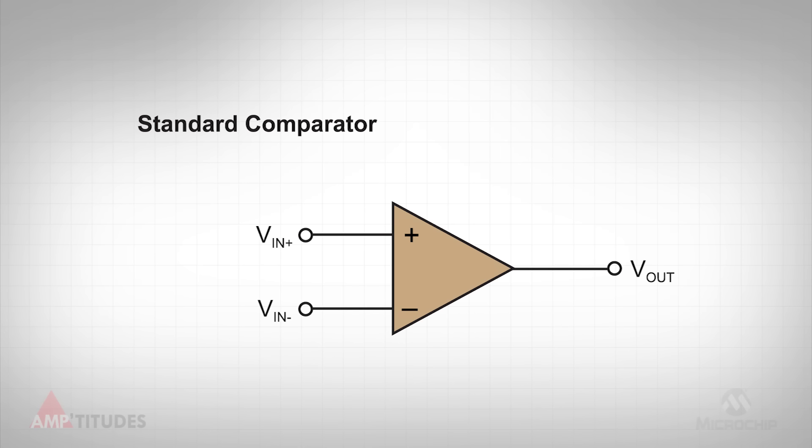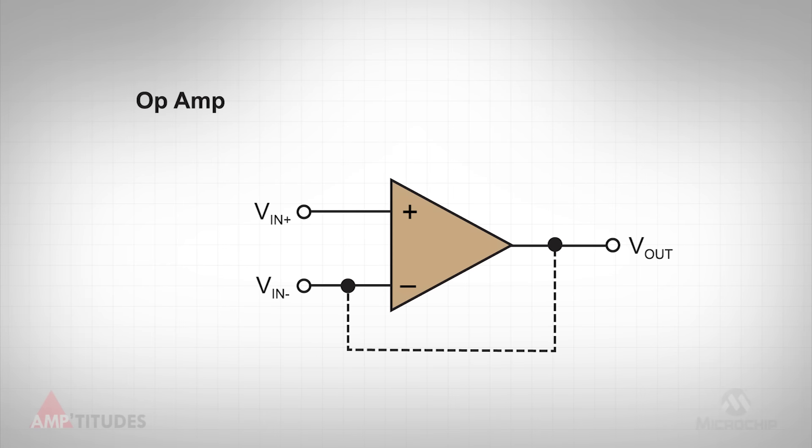Let's start with what I am referring to as a standard comparator. Similar to an operational amplifier, a standard comparator has an inverting and a non-inverting input and one output. While an operational amplifier is designed to be used with negative feedback, a comparator is specifically designed to work open loop, optimized for speed and maximum slew rate.